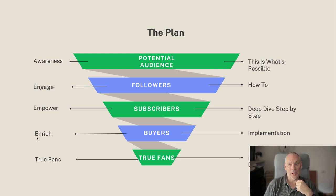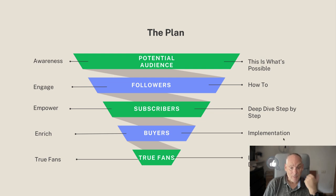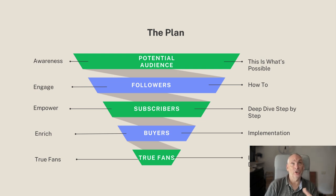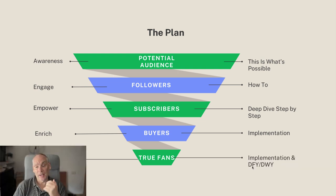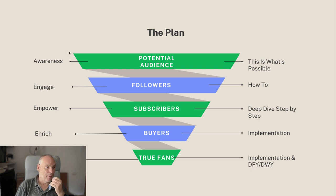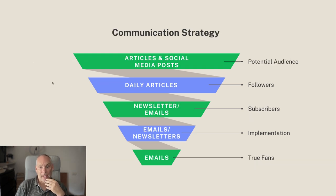Next we do the enrichment stage — this is how we help other people make money, help them generate income, and help them implement what works. Finally, for people who have already implemented, we help them do more with done-for-you and done-with-you products. We help them build it, and that is the plan.